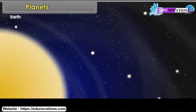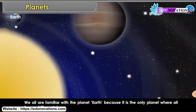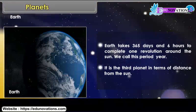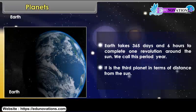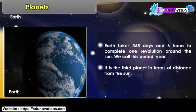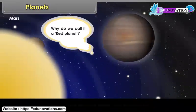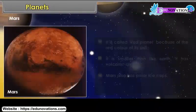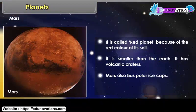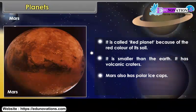Earth is the only planet where all forms of life sustain. Earth takes 365 days and 6 hours to complete one revolution around the Sun — we call this period a year. It is the third planet in terms of distance from the Sun. Mars is often called the red planet because of the red color of its soil. It is smaller than the Earth, has volcanic craters, and also has polar ice caps.